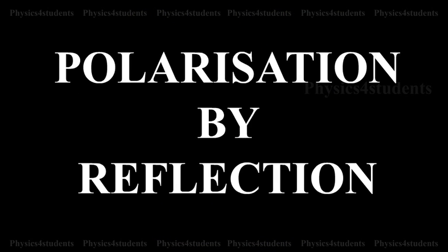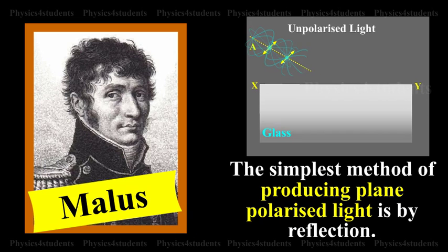Polarization by Reflection. The simplest method of producing plane polarized light is by reflection.